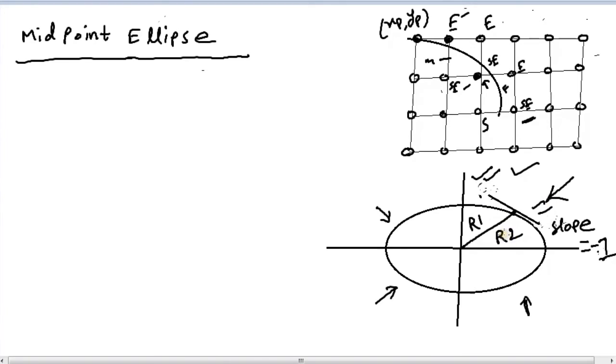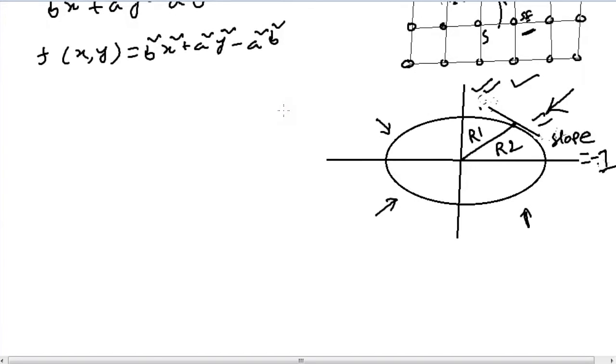We know the basic equation of an ellipse is given by b²x² + a²y² - a²b² = 0. Or if we write it as a function, we can say f(x,y) = b²x² + a²y² - a²b², and that would be zero for all points upon the ellipse.